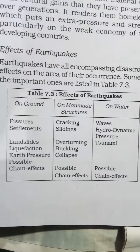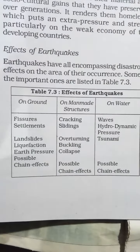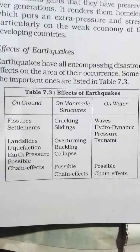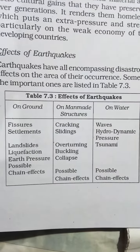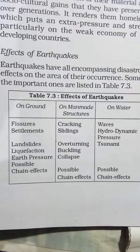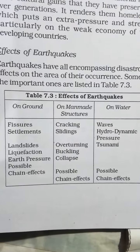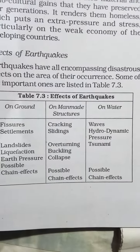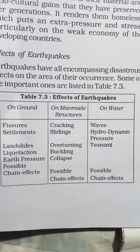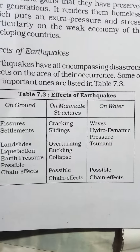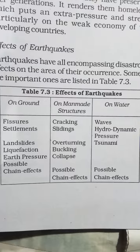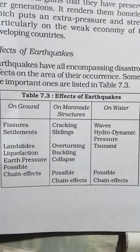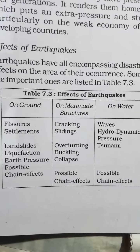Dear learners, right now I have the book of Geography: Physical Environment and India. Here, Table 7.3 provides information regarding the effects of earthquakes. You will see the effects on ground, on man-made structures, and on water.